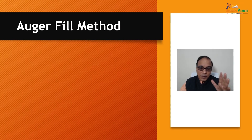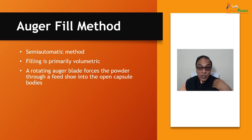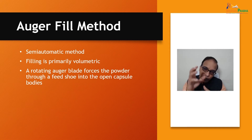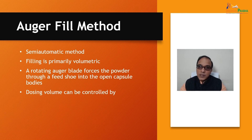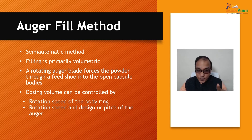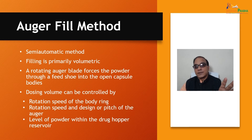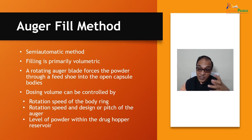The auger fill method is a semi-automatic method where filling is primarily volumetric. A rotating auger blade forces the powder through a feed shoe into the open capsule bodies. Dosing volume can be controlled by: the rotation speed of the body ring, the rotation speed and design or pitch of the auger, and the level of powder within the drug hopper reservoir.